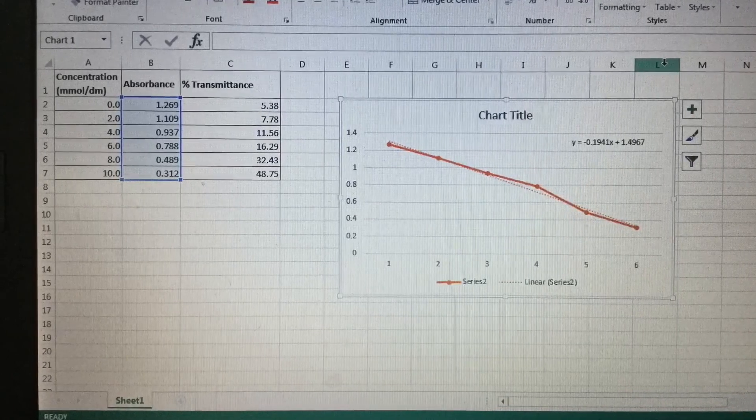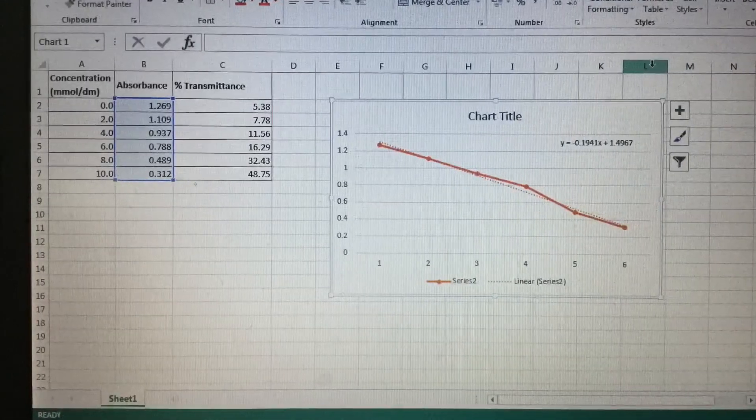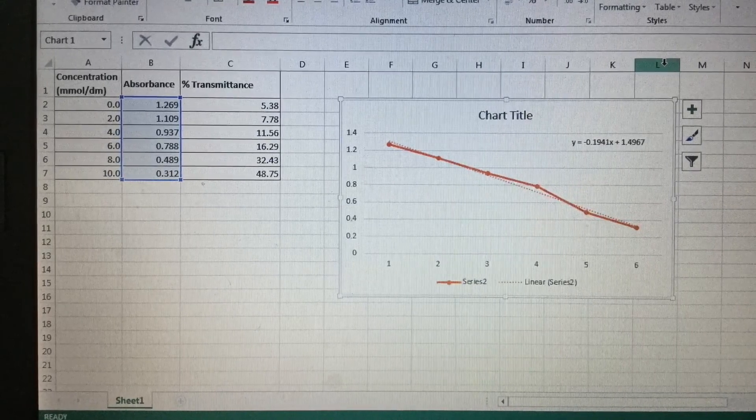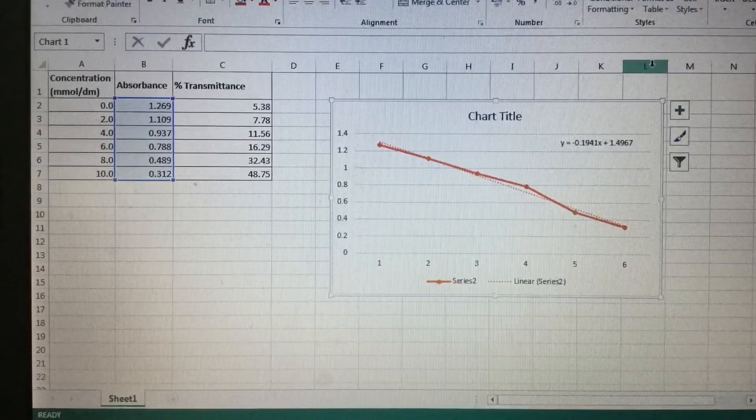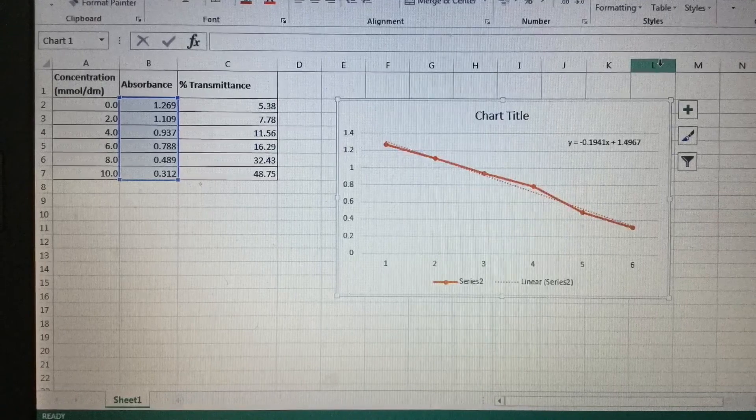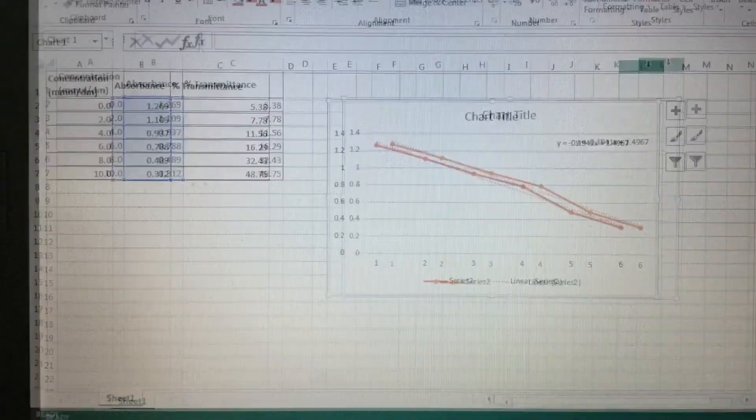Of course we would say find the absorbance, find the value on the y-axis, draw a straight line across to the line of best fit, take the line down to the x-axis and the intercept will give us our concentration of our unknown. Thank you very much.